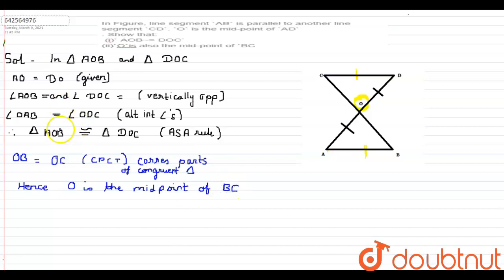So here in this question we have proved that triangle AOB is congruent to triangle DOC and O is the midpoint of BC. Thank you.